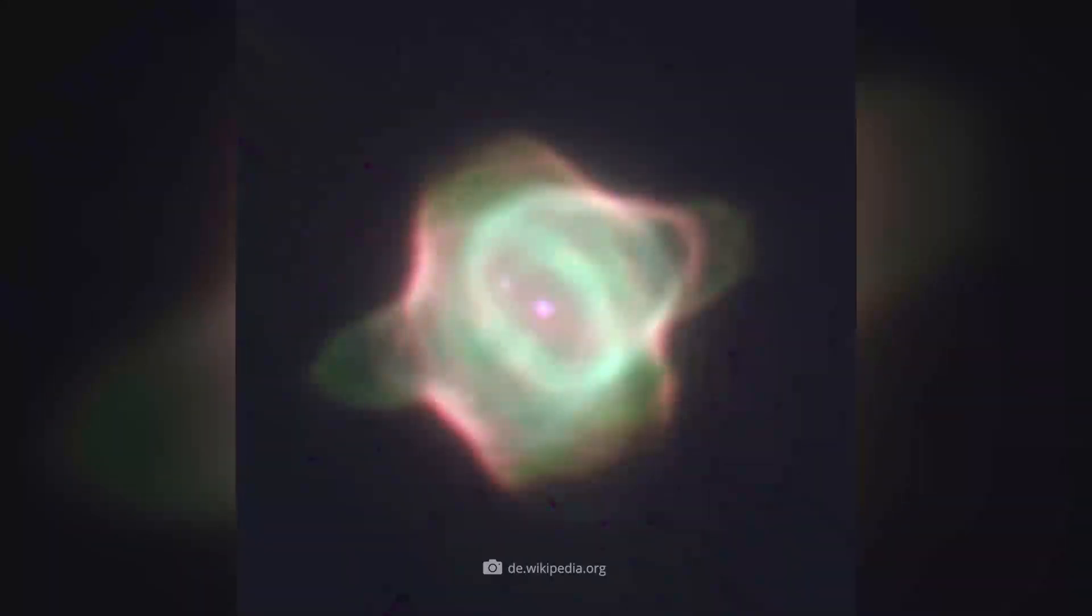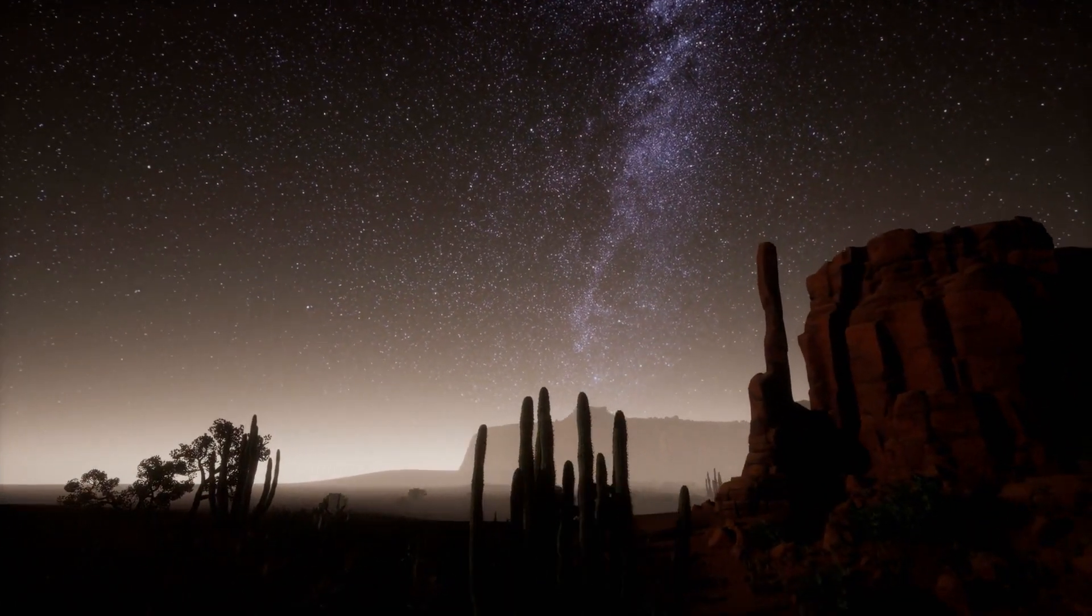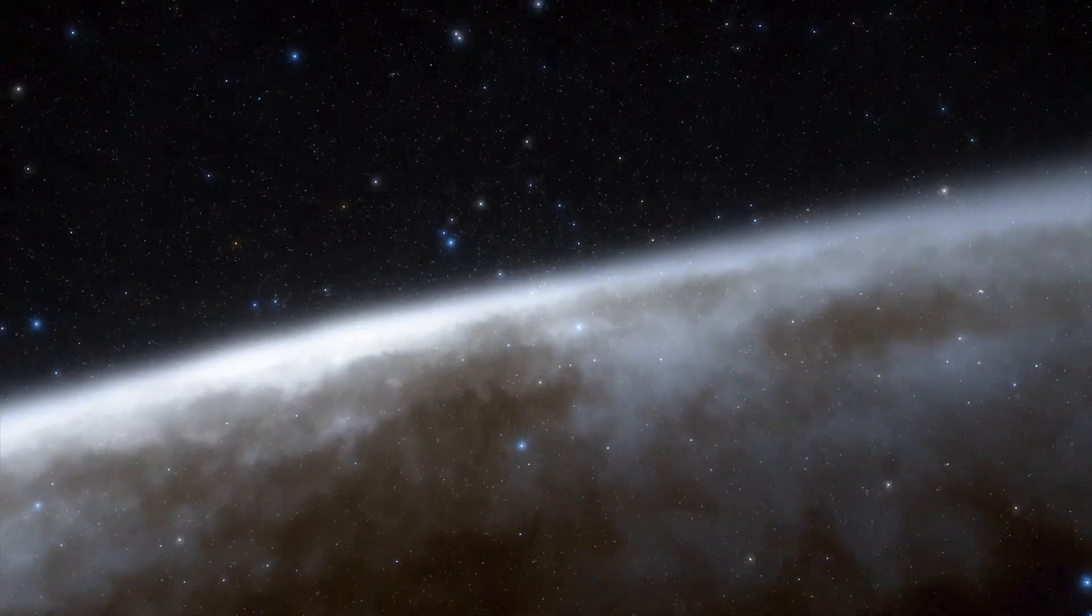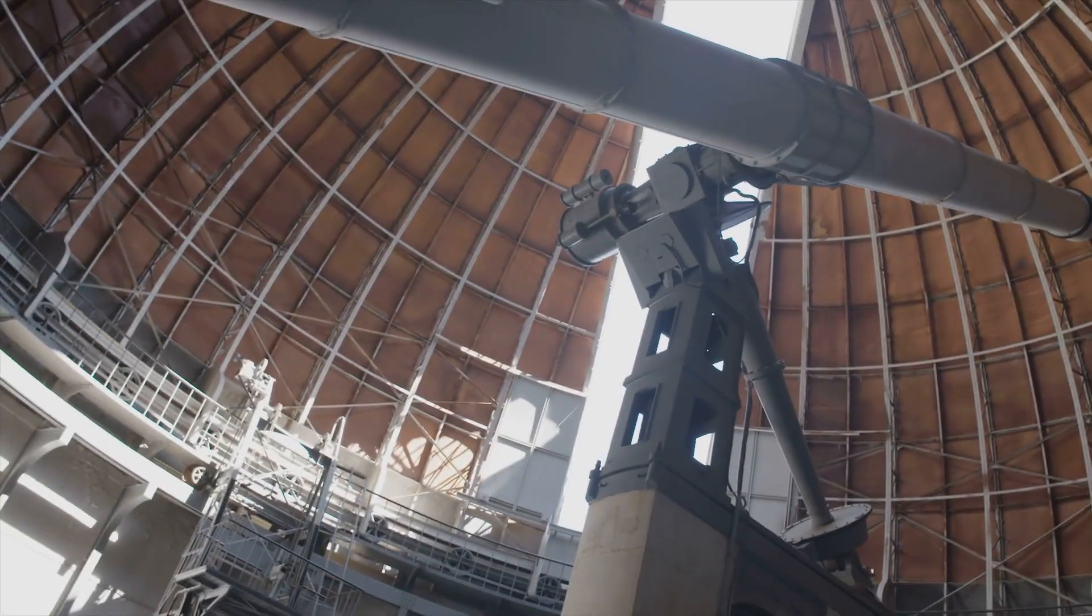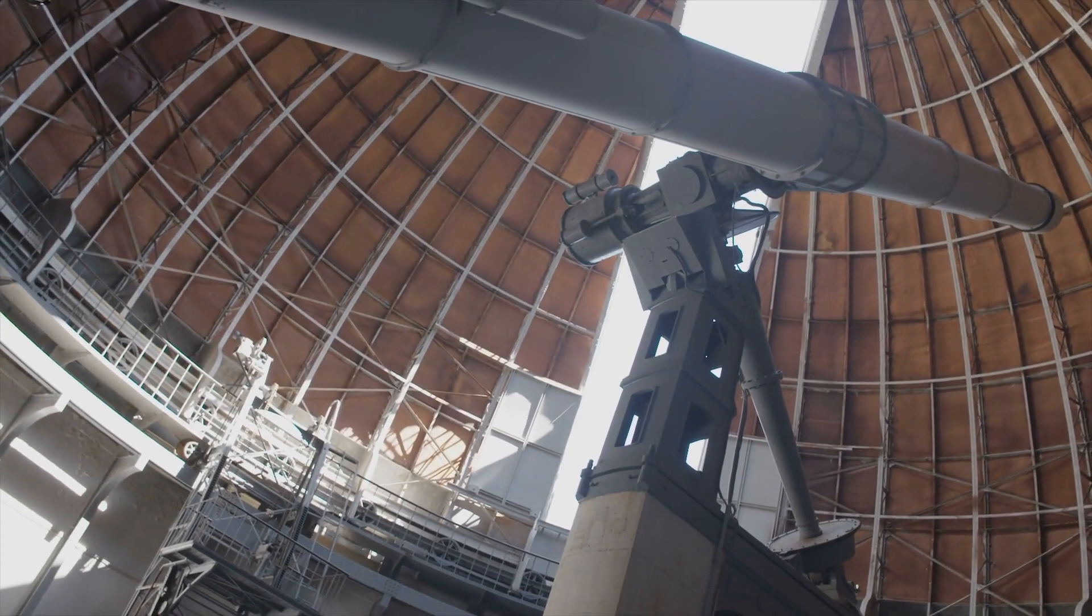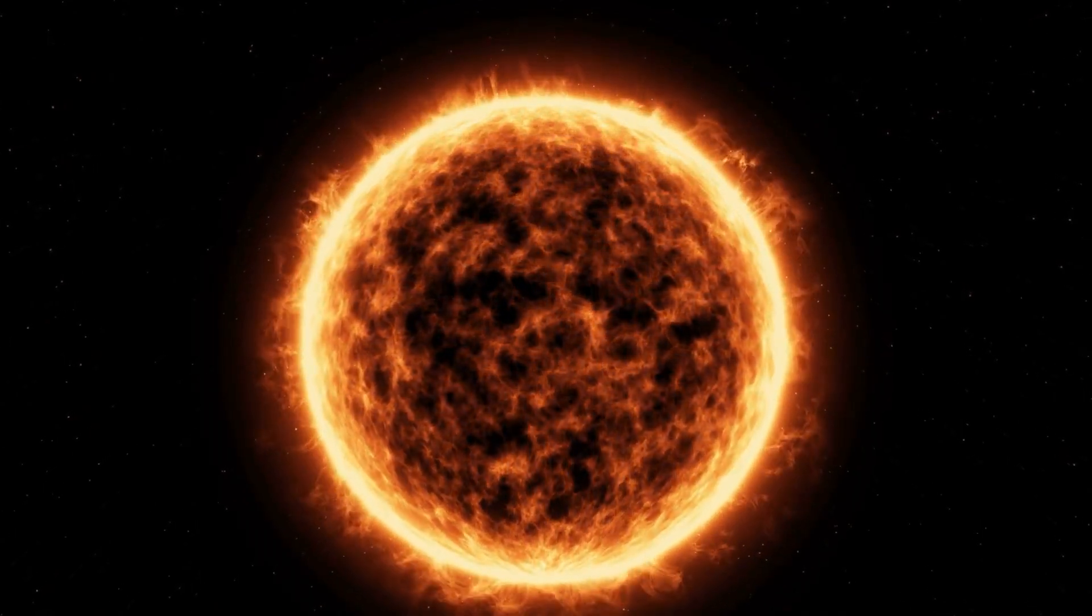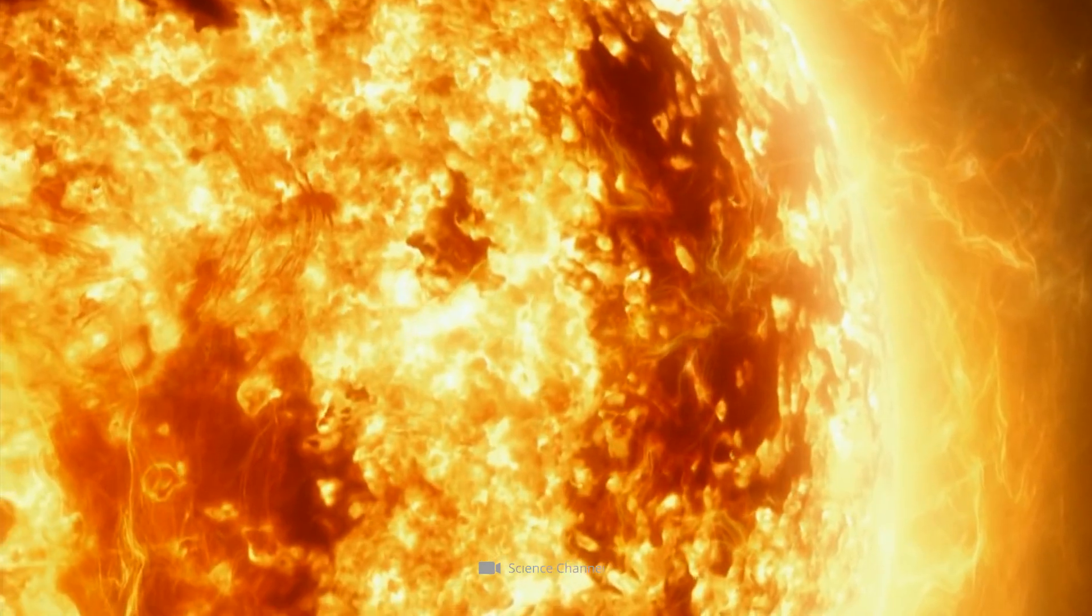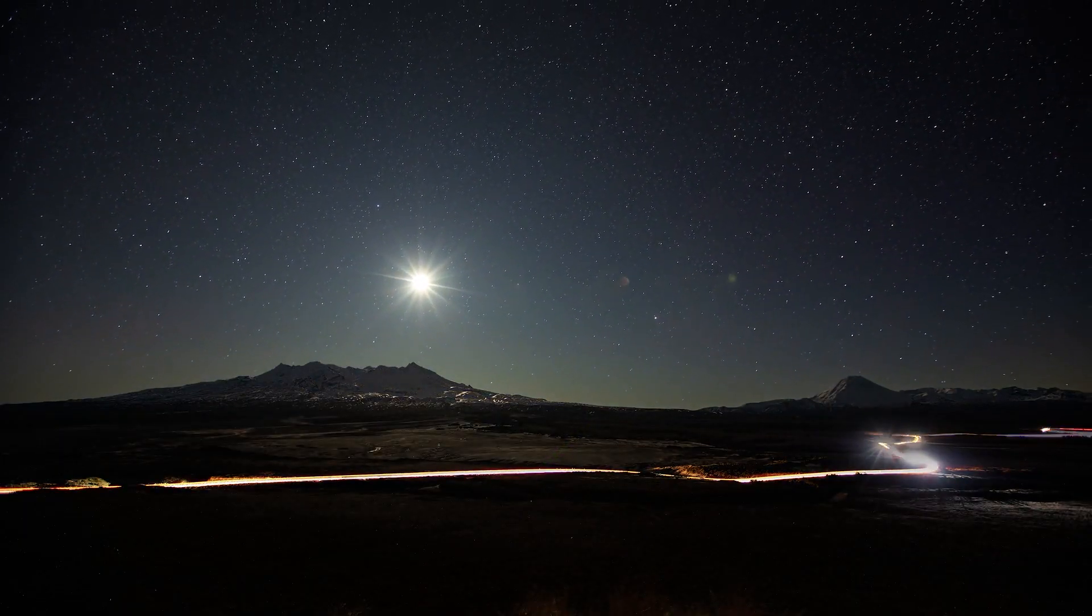The youngest known planetary nebula is the Stingray Nebula. Experts' observations leave no doubt that the object, which is 18,000 light-years away from us in the constellation Altar, was formed in the 1970s at the earliest. According to this, some spectra taken in 1971 still showed a red supergiant at the corresponding position. The first indications that the star, which had reached the end of its evolution, had made the transition to a planetary nebula, was finally found in 1989.